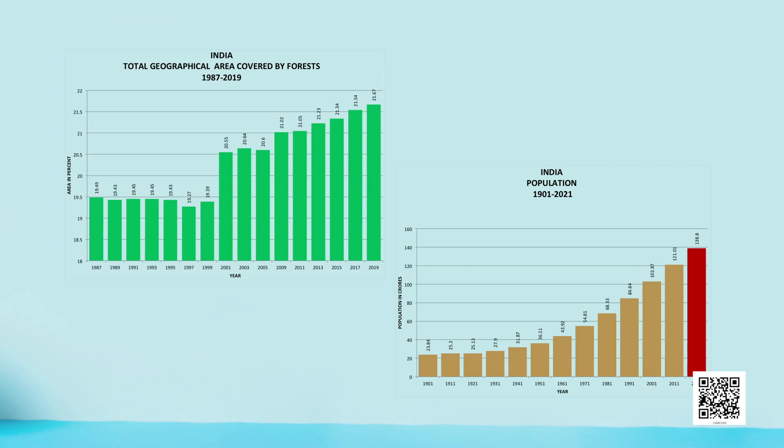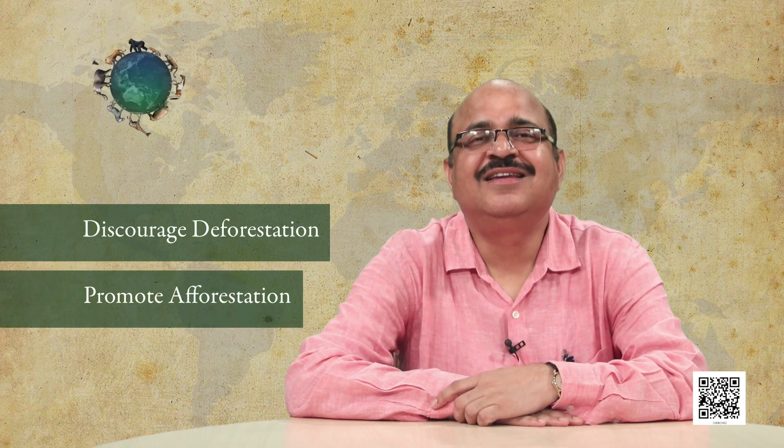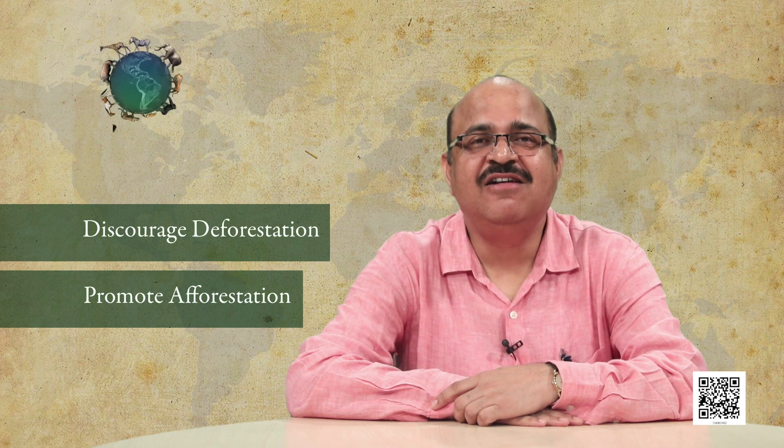The forest area is less compared to what is needed — as per requirement we must have 33 percent area under forest cover. The National Forest Policy of India, which came in 1988, set the goal of achieving 33 percent of geographical area under forest and tree cover. To meet this target, we must discourage deforestation and promote afforestation and reforestation.